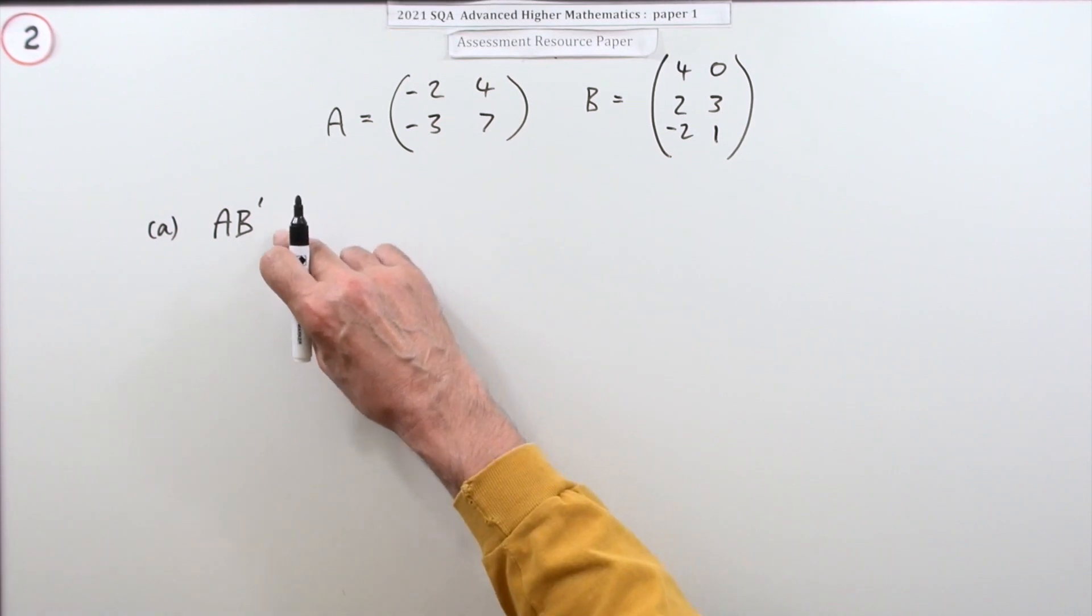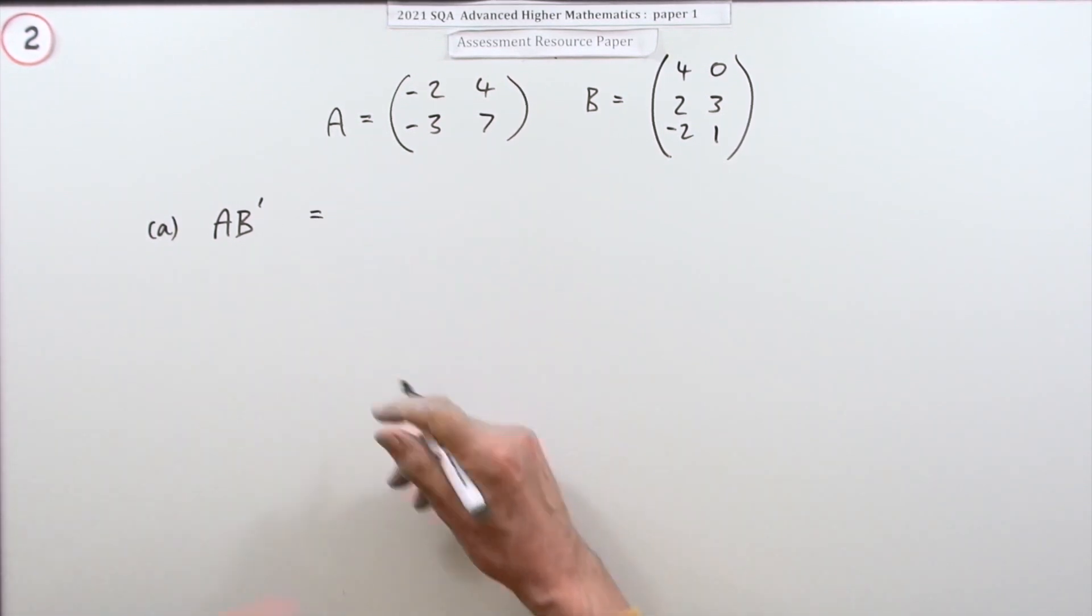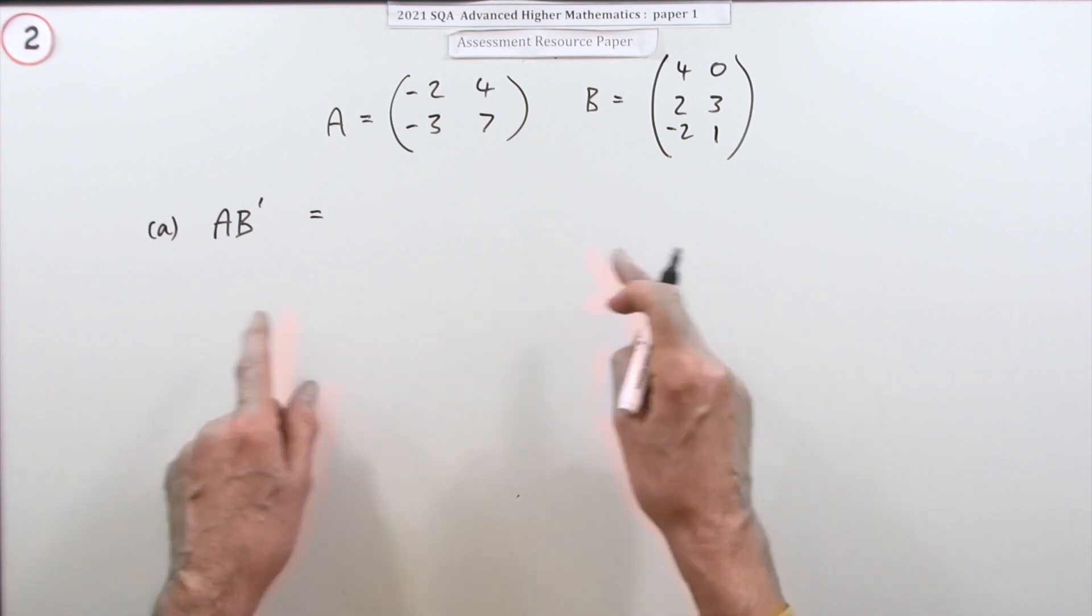Of course, you have to do it that way around. Multiplication of matrices isn't commutative.